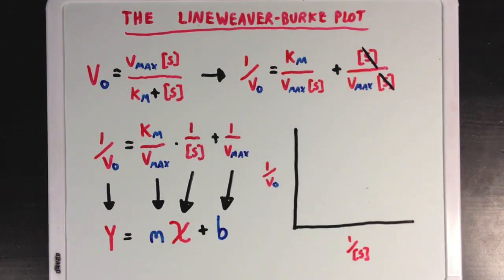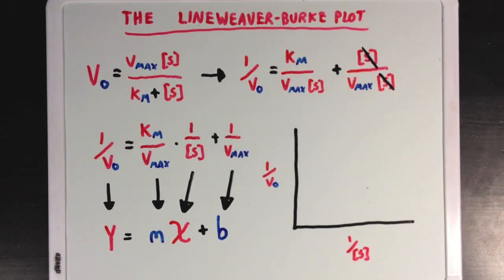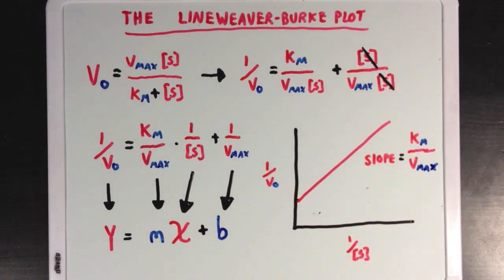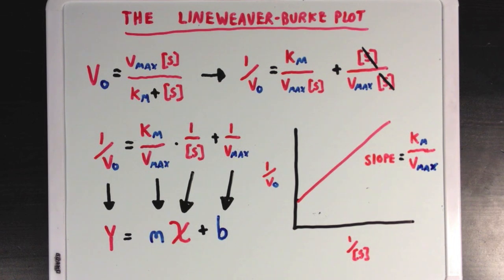We can then plot this on a graph, with our Y-axis being 1 over Vo, and our X-axis being 1 over S. And if we draw out the corresponding line, the slope of our line will be equal to Km over Vmax, and our Y-intercept will be equal to 1 over Vmax. And we call this plot a Lineweaver-Burk plot. And it gives us another way to look into the Michaelis-Menten equation.